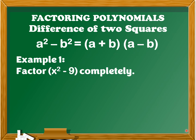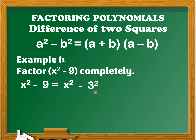Let us consider example number one: factor x squared minus 9 completely. First, we're going to write this polynomial in the form of a squared minus b squared. So x squared minus 9 is equal to x squared minus 3 squared, since 3 squared is equal to 9.